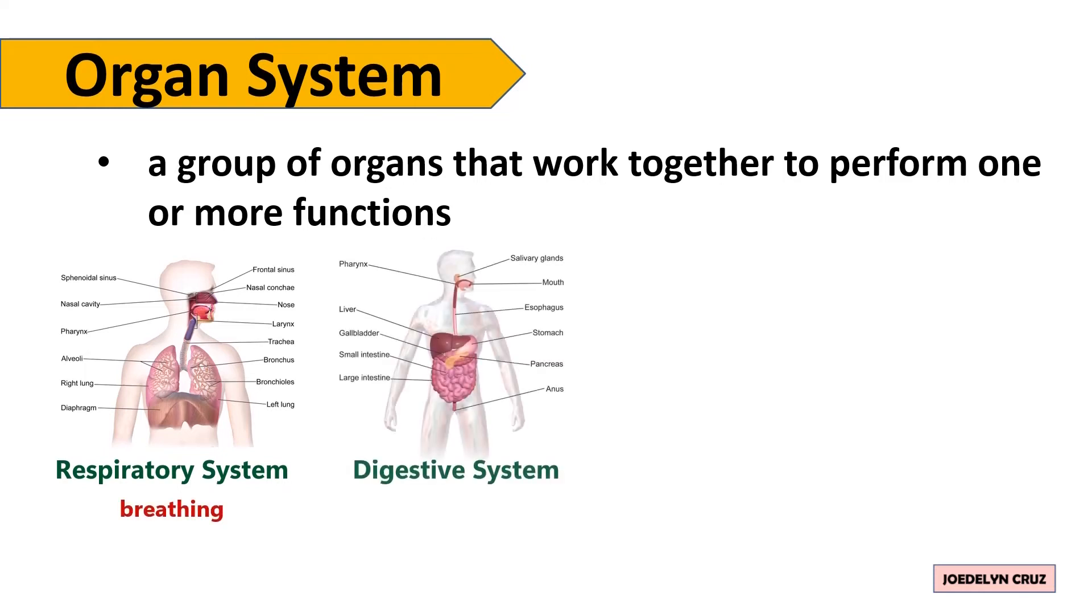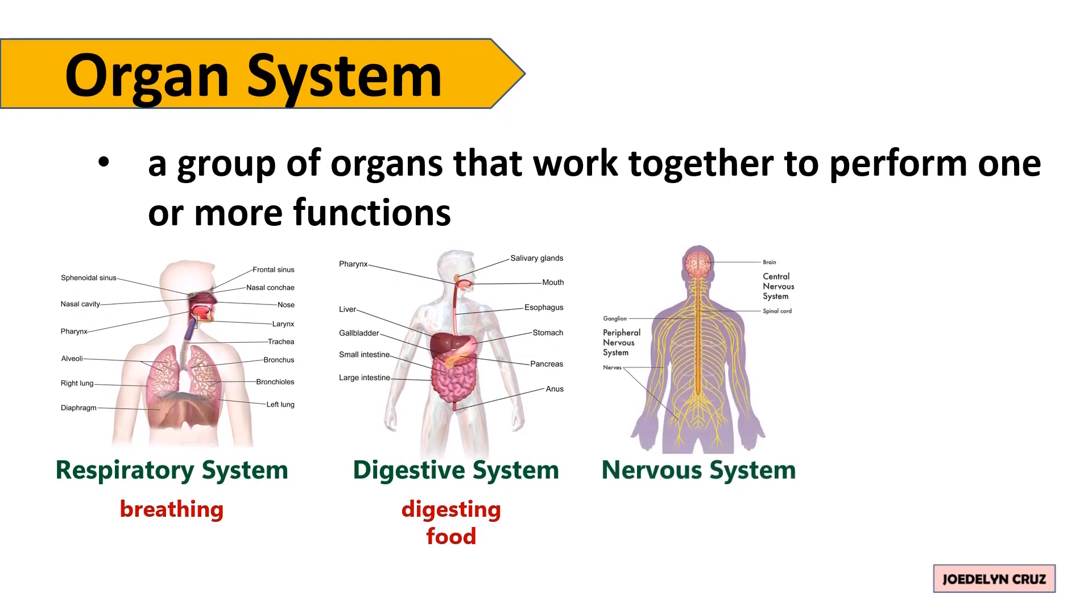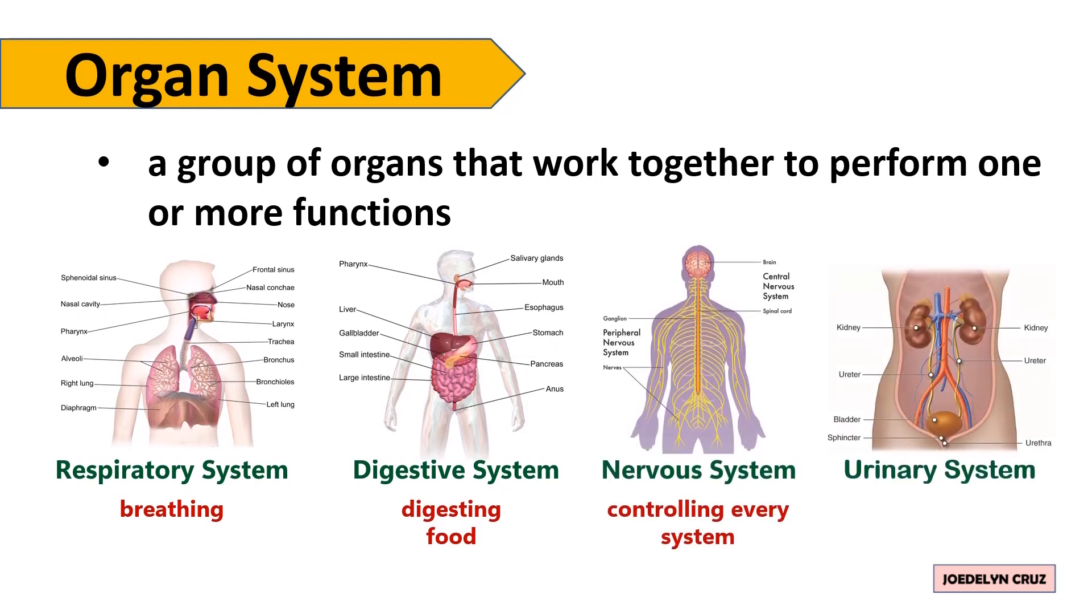digestive system for digesting food, nervous system for controlling every system, and urinary system for eliminating waste.